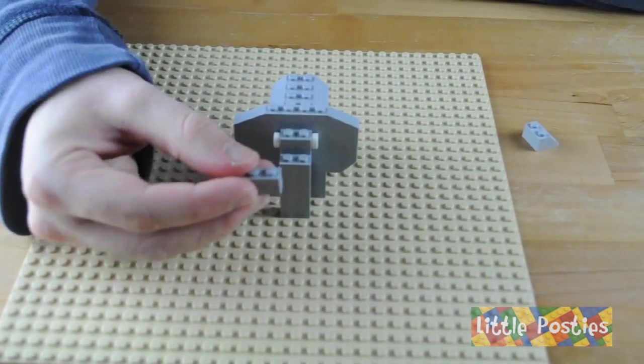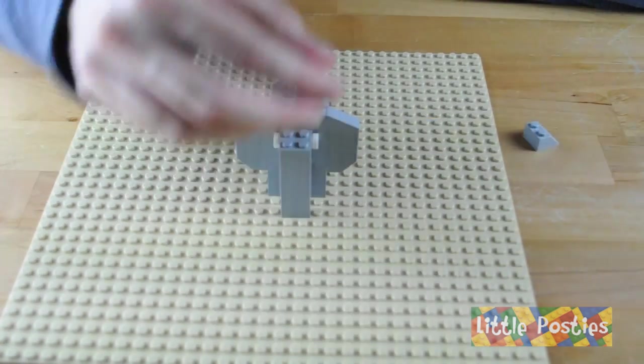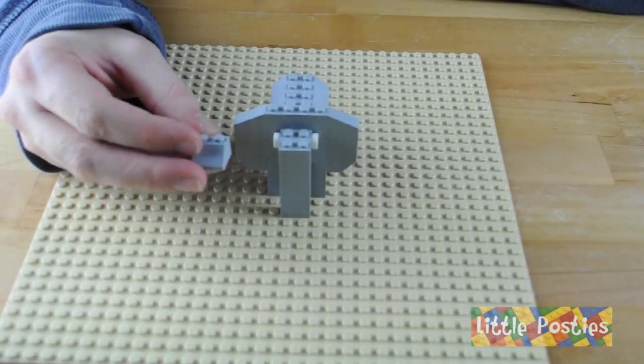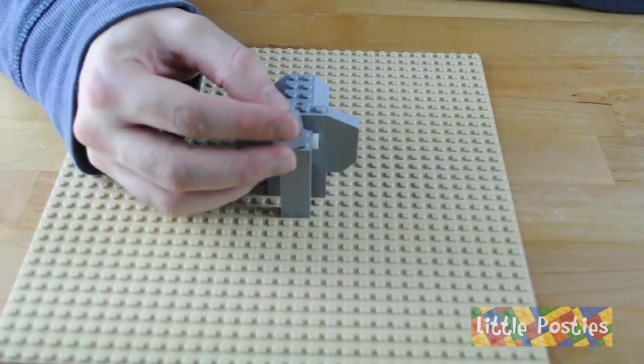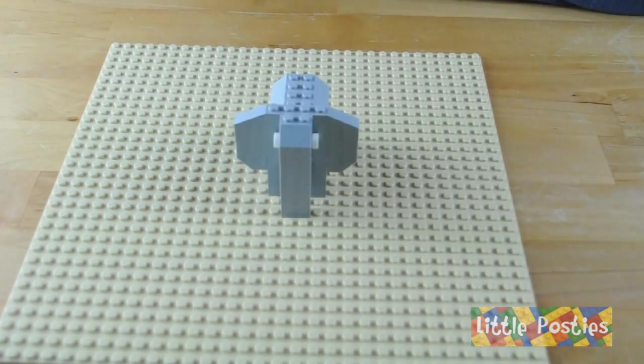Lastly on top of that we put the 1x2 brick and finally the final slope. And that's our elephant.